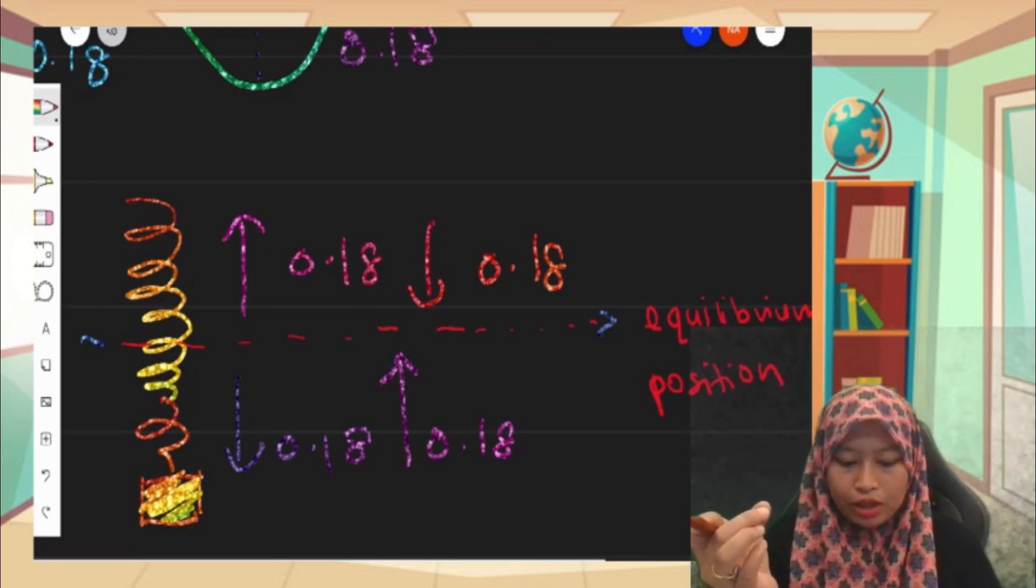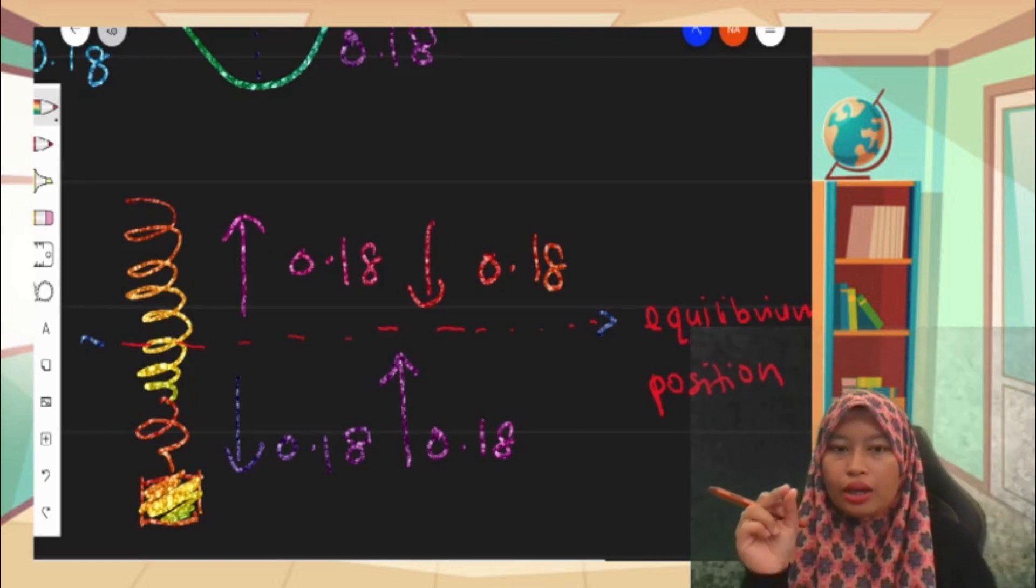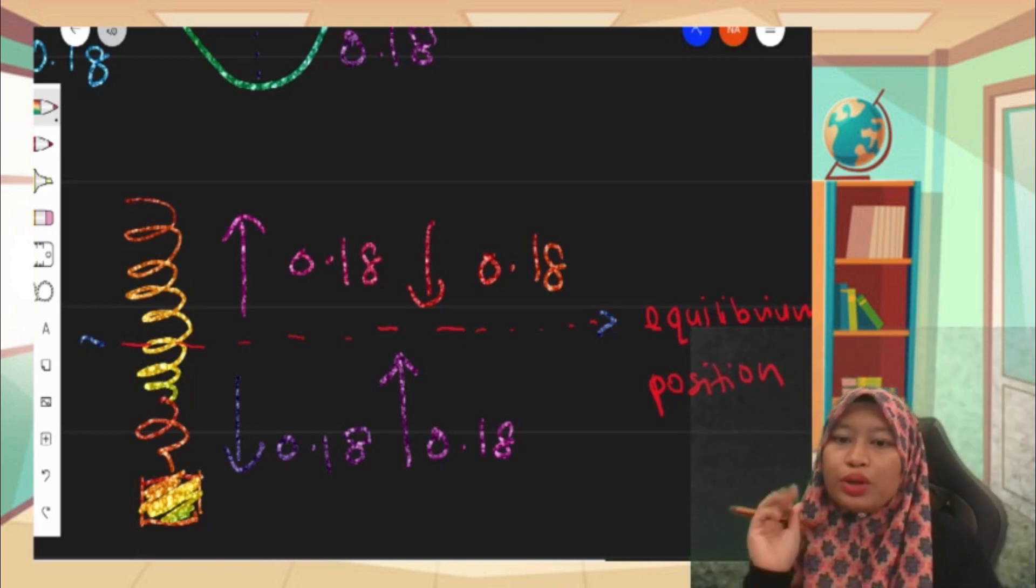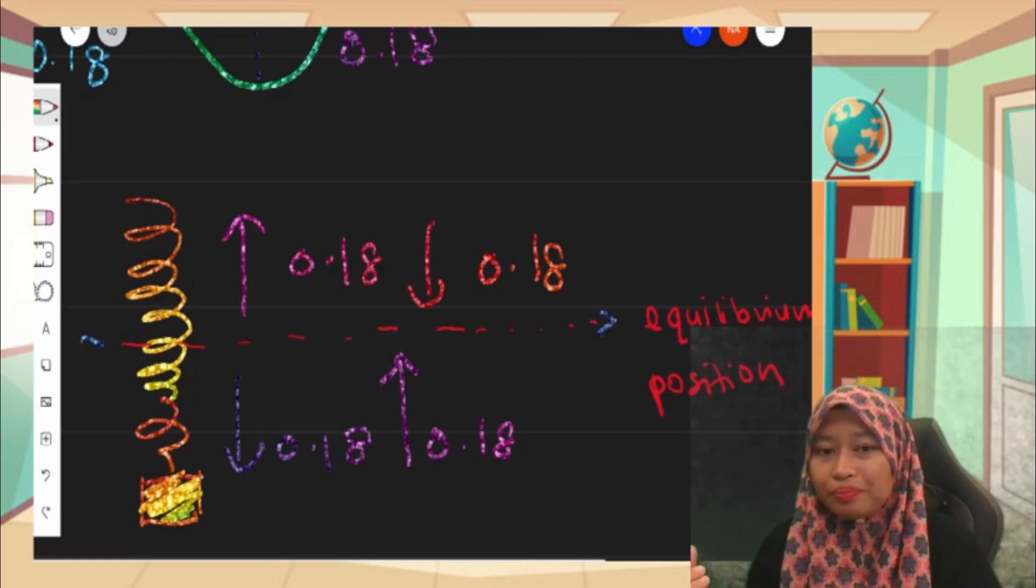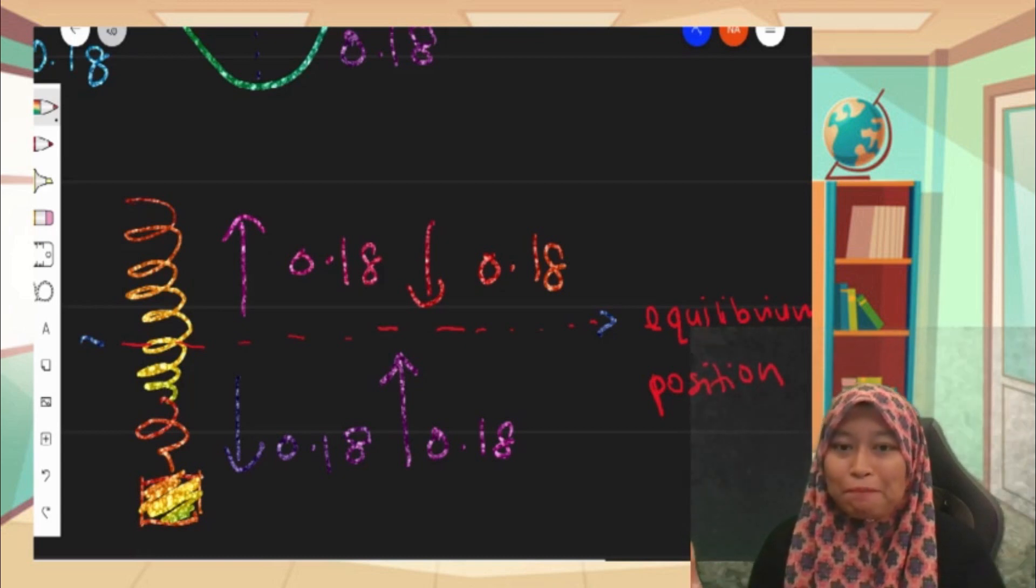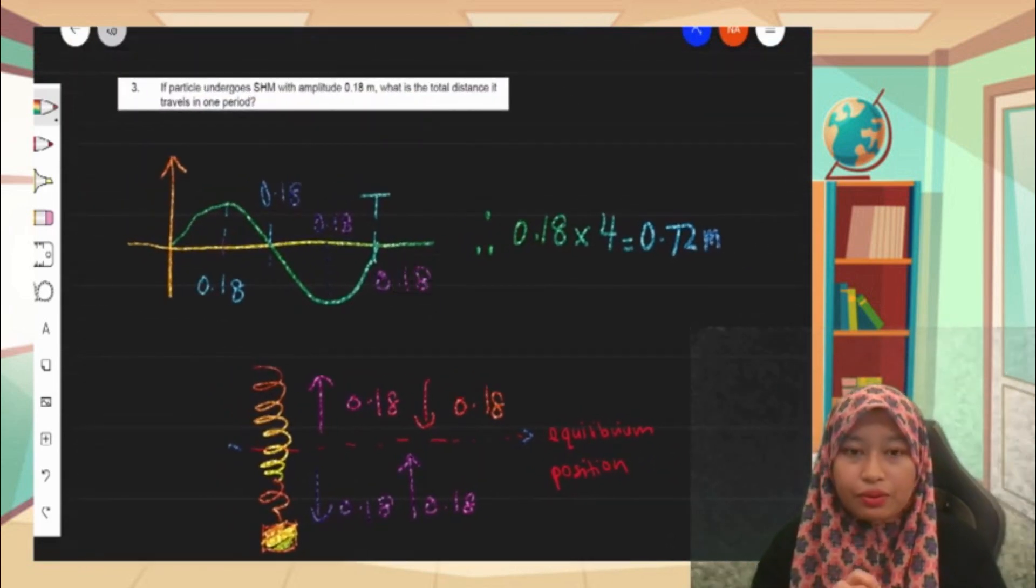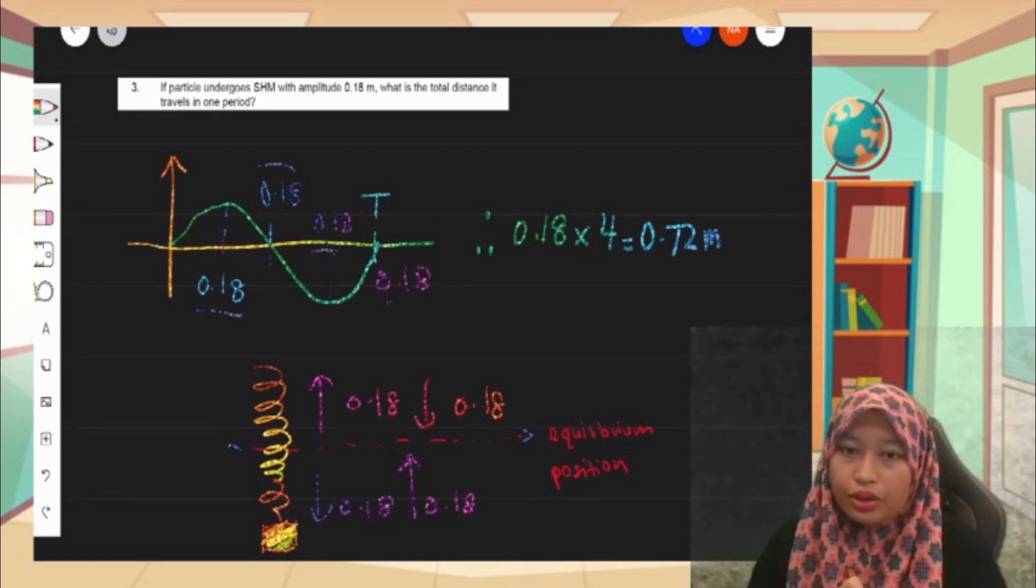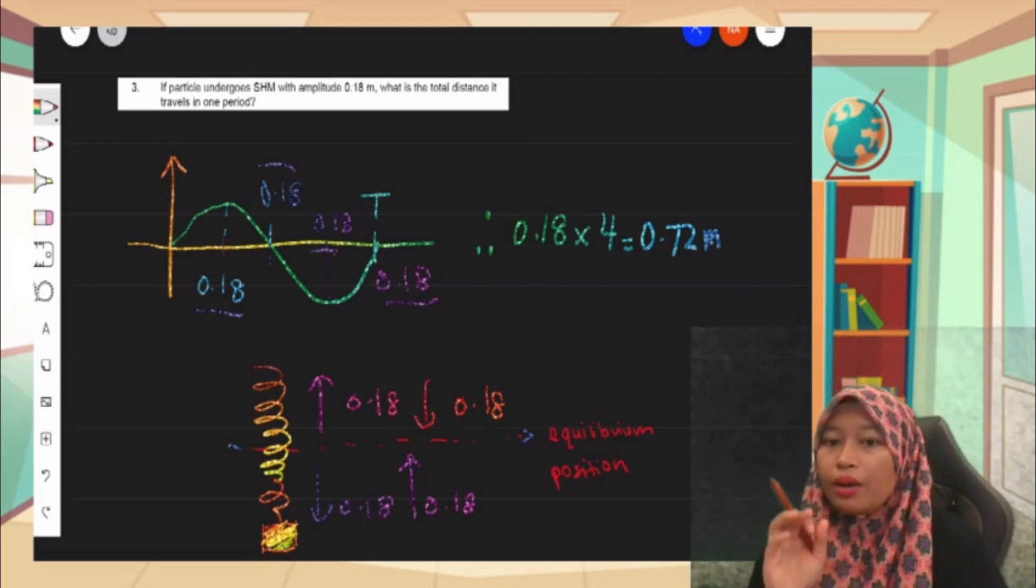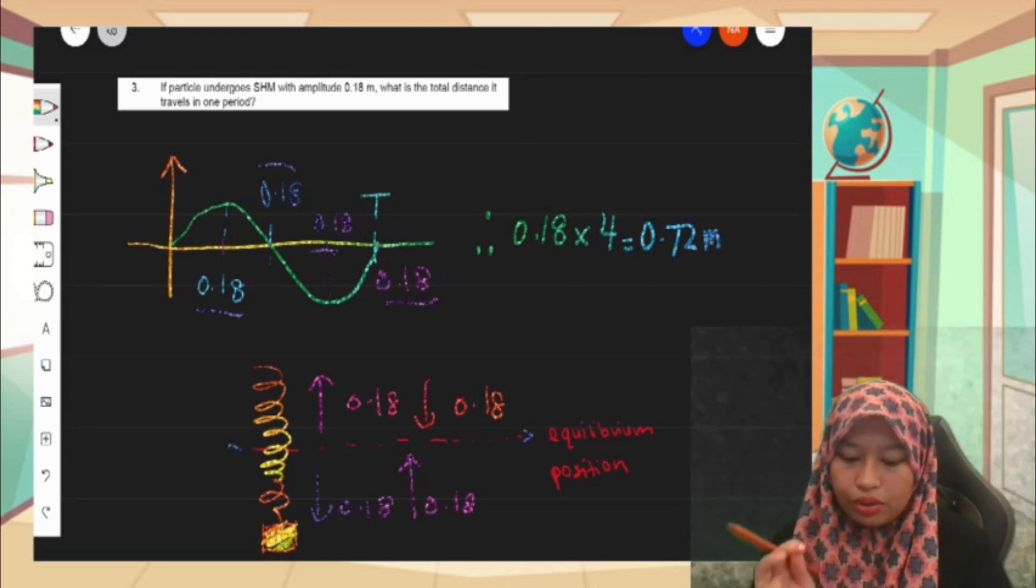So to complete one oscillation for the mass attached to the spring, we need four times of 0.18 meter. If you can see from the graph, for one complete oscillation we have four times of 0.18: 0.18, 0.18, 0.18, 0.18 for every motion, for every movement. We have 0.1 meter, so therefore 0.18 meter times 4, we got total distance is 0.72.